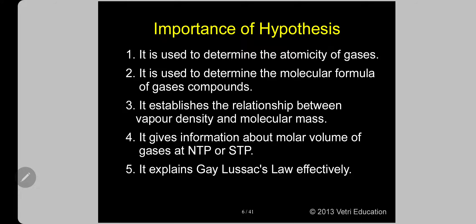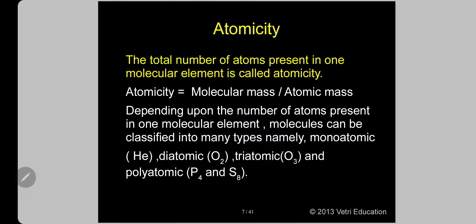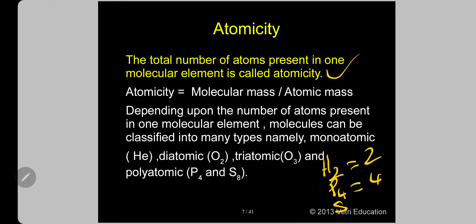Atomicity: the total number of atoms present in one molecular element is called atomicity. H₂ has atomicity 2, phosphorus P₄ has atomicity 4, sulfur S₈ has atomicity 8. Atomicity = molecular mass ÷ atomic mass. Depending on the number of atoms, molecules can be classified as monoatomic, diatomic, triatomic, and polyatomic. P₄ and S₈ come under polyatomic.